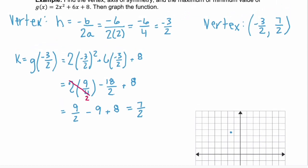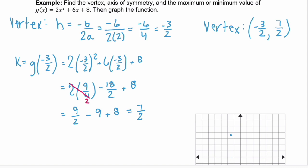Now for the axis of symmetry — remember the axis of symmetry is x equals the x value of your vertex. So our axis of symmetry is the equation x = -3/2. I'll draw a dotted line here; it's the vertical line that goes right through our vertex.